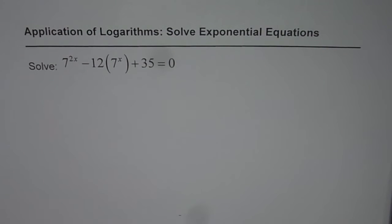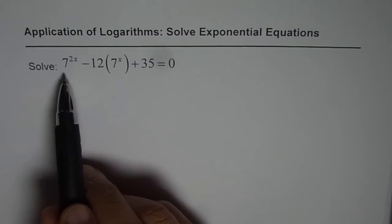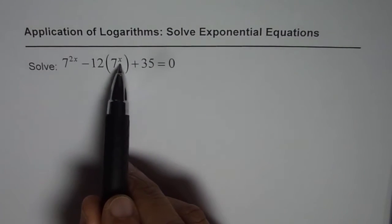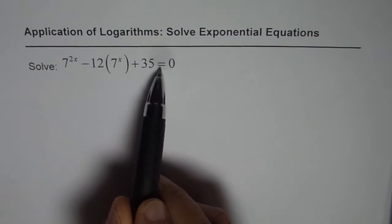I'm Anil Kumar and here is an application of logarithms. We'll solve an exponential equation which is kind of a quadratic form using logarithms at the end. So we have the equation as 7 to the power of 2x minus 12 times 7 to the power of x plus 35 equals to 0.